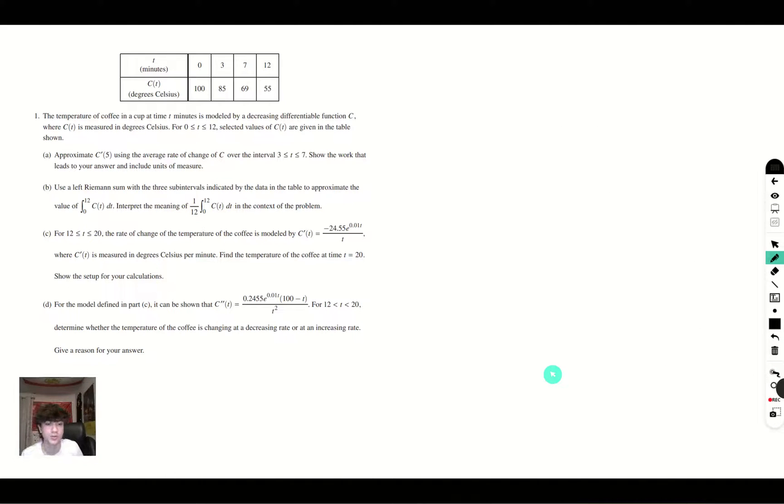Alright, for part C, we're going to use our calculator to solve it, because we're given an equation C prime of T, and what we're going to want to do is integrate it from 12 to 20, the bounds given here. And this will give you the change of temperature, but this would be assuming that this starts at zero. But at time 12, we have the temperature of 55, so we have to add 55 to this.